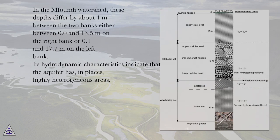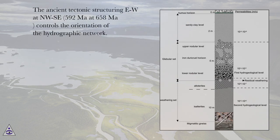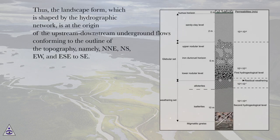The hydrodynamic characteristics indicate that the aquifer has, in places, highly heterogeneous areas. The ancient tectonic structuring EW to NW-SE, dated 592 Ma to 658 Ma, controls the orientation of the hydrographic network. Thus, the landscape form, shaped by the hydrographic network, is at the origin of upstream-downstream underground flows conforming to the outline of the topography.